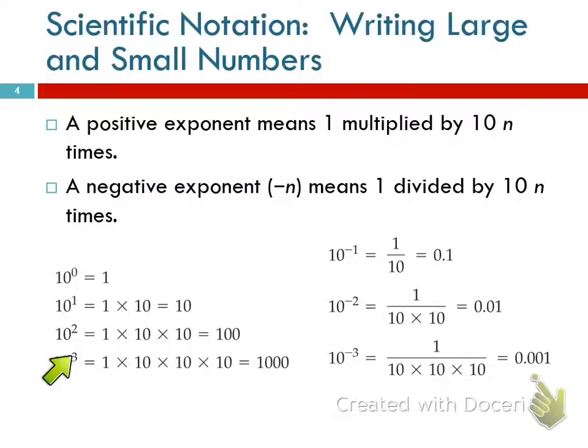The way I think of it is, this 3 tells me how many zeros there are. So 10 to the third is a 1 with 3 zeros after it. 10 to the 1 is a 1 with 1 zero. 10 to the 0 is a 1 with 0 zeros. It's a 1. You should have learned that in a previous math class, but I know that people forget stuff.